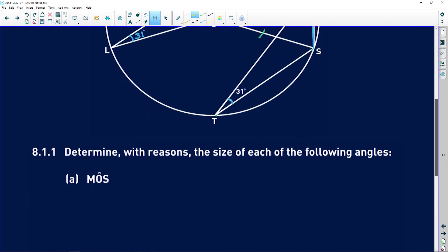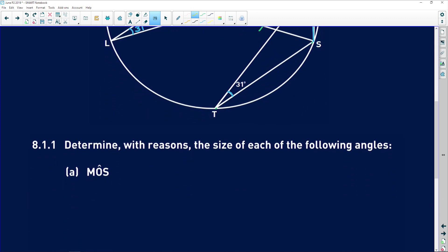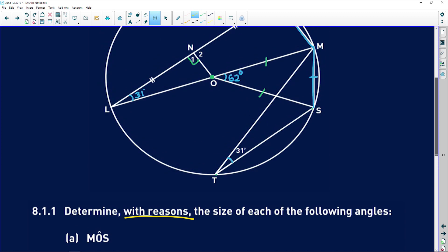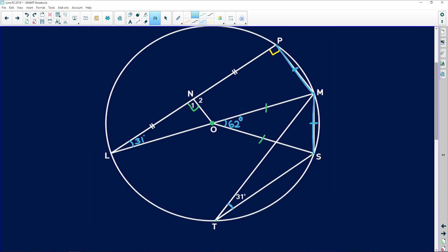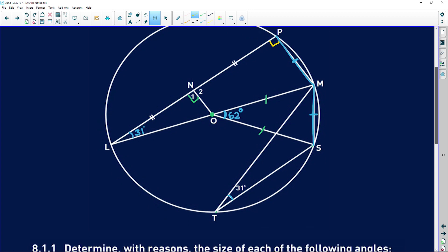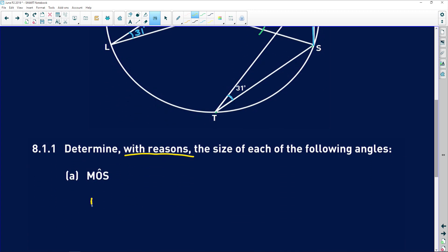So 8.1.1 says determine with reasons, very important guys, you need to prove your Euclidean arguments, the size of each of the following angles. So angle MOS. That's this angle here at the center. And we found that it is 62 degrees. MOS is equal to 62 degrees. Why? Because the angle at the center is equal to two times the angle at the circumference. Easy peasy.